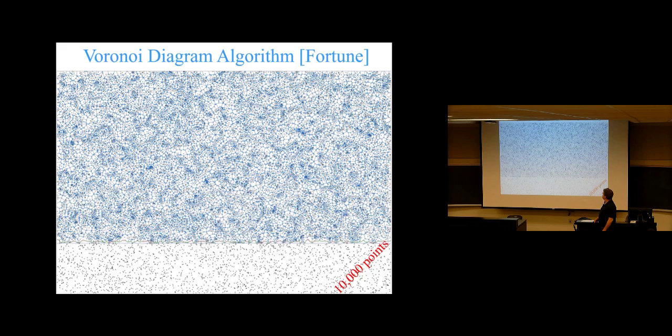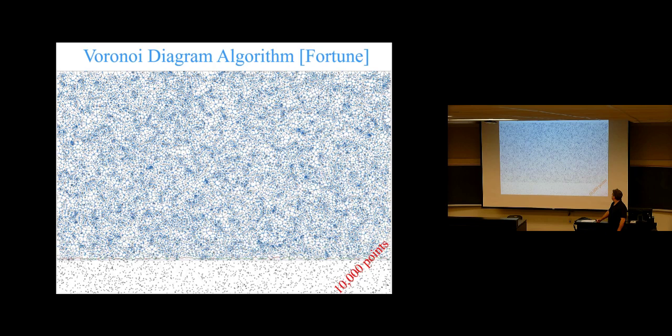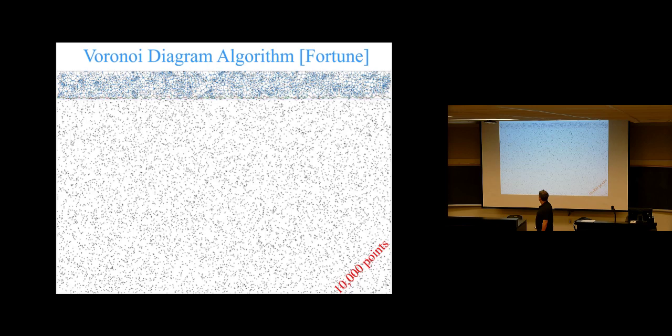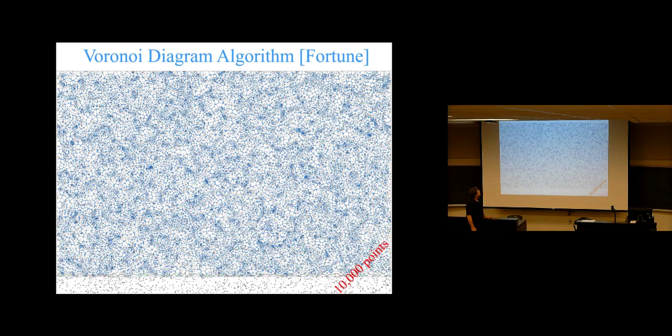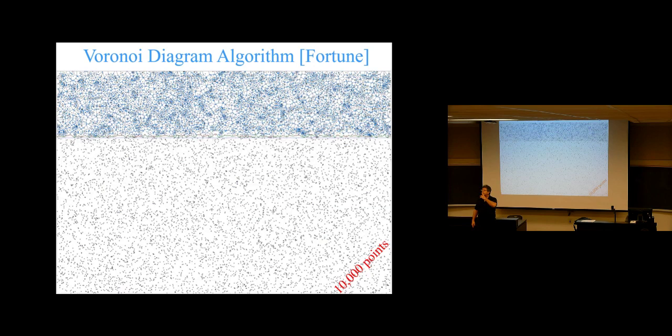Here is Fortune's algorithm computing the Voronoi diagram of 10,000 points, now running in real time — that's roughly how long it would actually take to run on 10,000 points, possibly even faster. So 10,000 points, Voronoi diagram, right there — it is quick. If this were the quadratic algorithm, it would take many minutes or even hours for that many points.